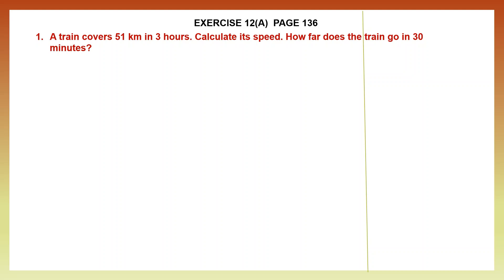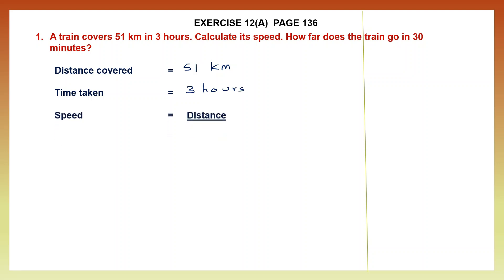The second part of the question: how far does the train go in 30 minutes? So let's start. Distance covered is 51 kilometers. The time taken is 3 hours. We need to calculate its speed, and the formula to calculate speed is distance by time. So here distance is 51 kilometers and the time is 3 hours, so we need to divide 51 by 3.